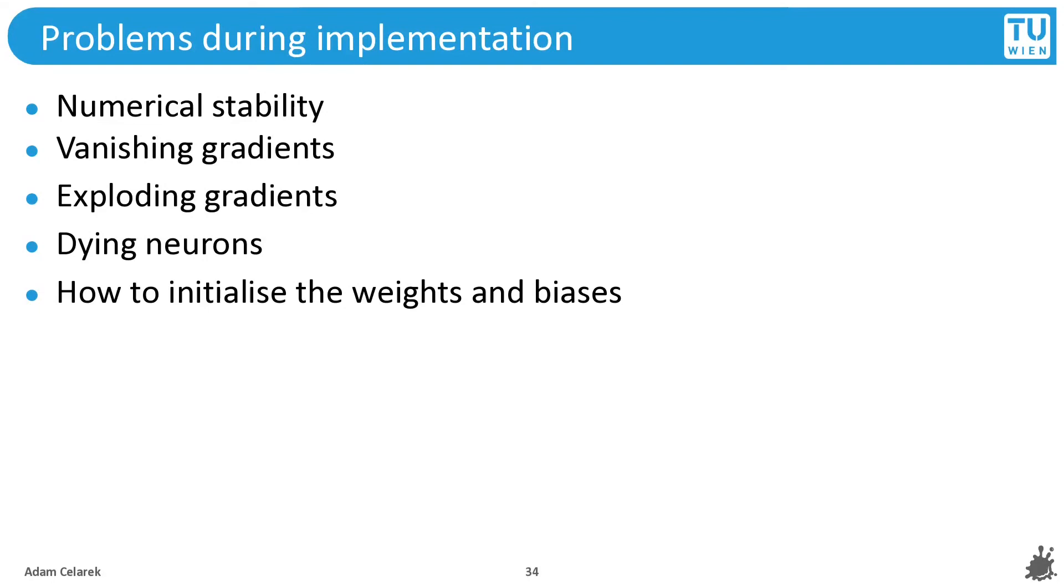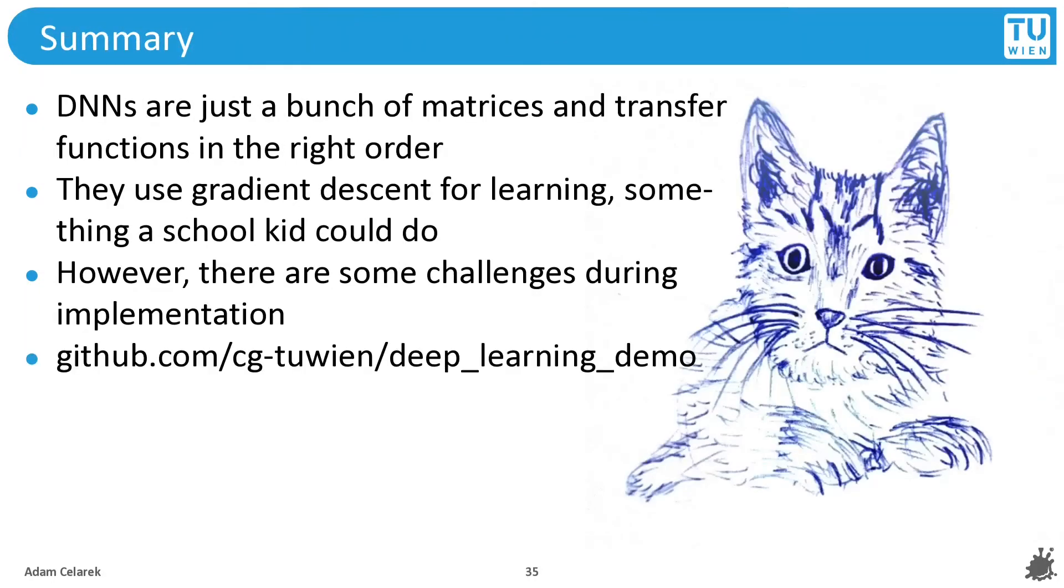Here comes the summary. Deep neural networks are just a bunch of matrices and transfer functions in the right order. Gradient descent is used for learning, something that actually a school kid could do. However, the problems are in the details, and implementing a fully connected neural network is actually quite challenging. You can see my implementation on GitHub, and I will post a link in the description. Thank you.